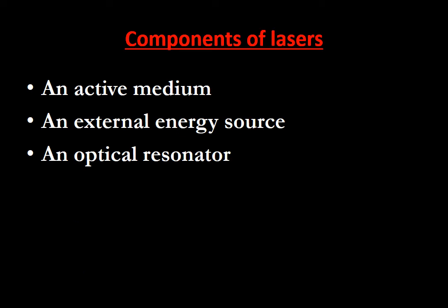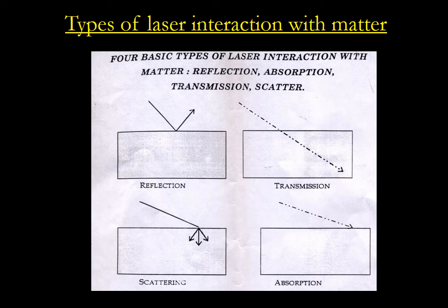The laser has three components: an active medium, an external energy source, and an optical resonator. Regarding laser interaction with matter — which can be solid, liquid, or gas — there are four types of interactions: reflection of the laser beam, transmission through matter, scattering on the surface of matter, and absorption into tissues. This depends on the water or hemoglobin content present in the cells.